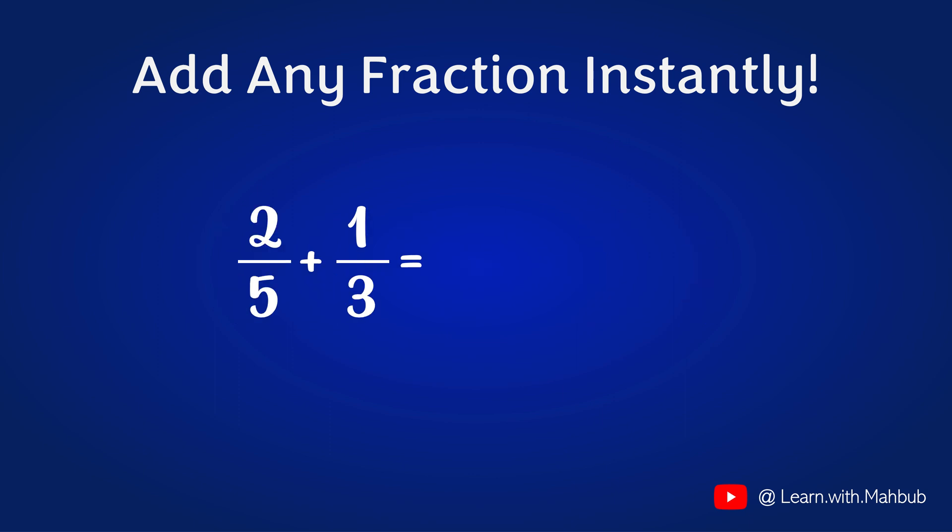Now let's add 2 fifths with one third. First, multiply the denominators. 3 times 5 is 15. Let's put 15 in the denominator. Now cross multiplication. 2 times 3 is 6 and 5 times 1 is 5. Since we are adding the fractions, we will put a plus sign here. 6 plus 5 is equal to 11. So the answer is 11 by 15.